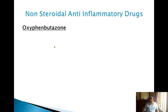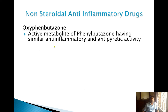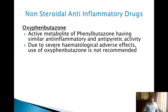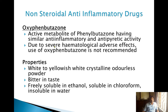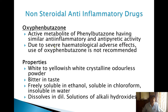Oxyphenbutazone is the active metabolite of phenylbutazone with similar anti-inflammatory activity. Phenylbutazone gets converted to oxyphenbutazone inside the body, so this drug was made directly available. Due to severe hematological adverse effects, it is not usually recommended much. Properties: white to yellowish-white crystalline odorless powder, bitter in taste, freely soluble in ethanol, soluble in chloroform, insoluble in water, and dissolves in dilute solutions of alkali hydroxides like sodium hydroxide and potassium hydroxide.